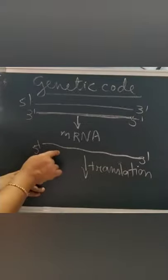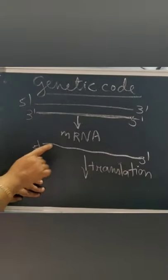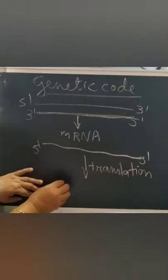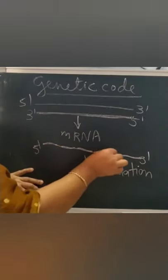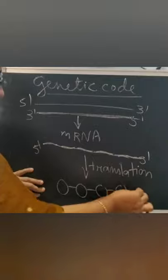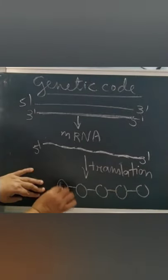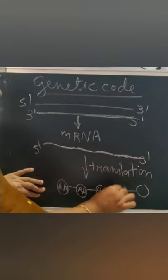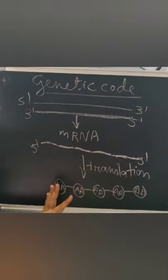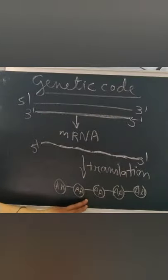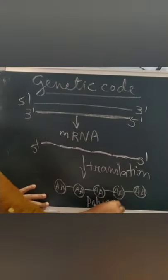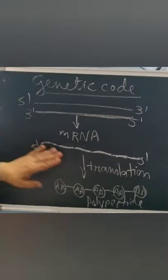In this genetic code, whatever sequence the mRNA has, that sequence is coded by the amino acid. The triplet codons are made and the amino acids are joined by peptide bonds. There are 20 types of amino acids which can come in any arrangement as per the sequence in the mRNA, and ultimately the polypeptide molecule is formed.